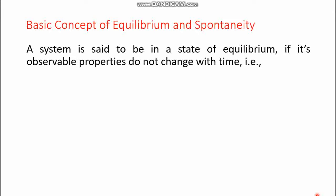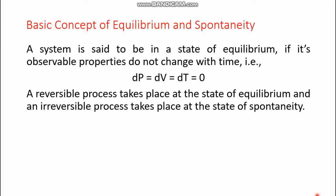A system is said to be in a state of equilibrium if its observable properties do not change with time. The observable properties are pressure, temperature, and volume. If they are not changing, then their derivatives must be equal to zero: dV = 0, dP = 0, and dT = 0.